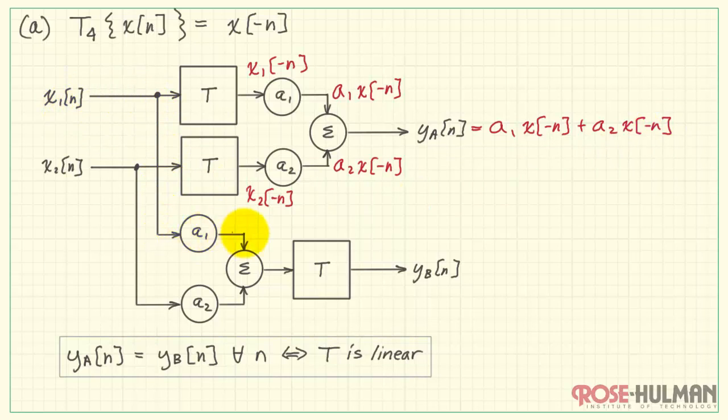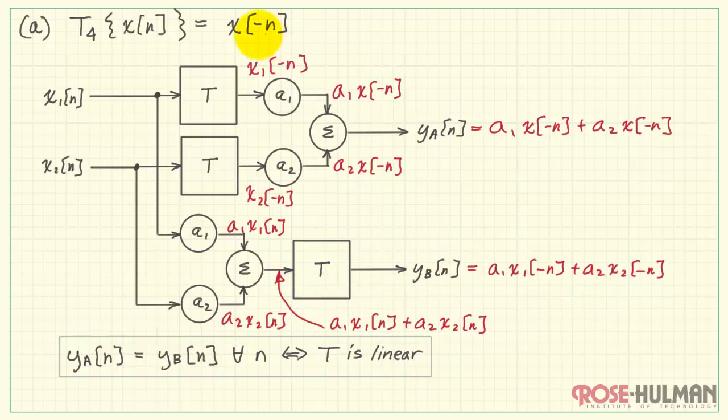Now on our pre-scale and sum technique, we have X1 times A1 and X2 times A2. We add those together and use that as the input to our system T. T operates by changing the sign of each time index. We have minus N in each case. Now we compare that to our results for YA. We see that they are in fact the same. Therefore, we conclude that system T4 is linear.